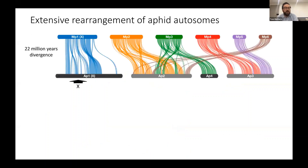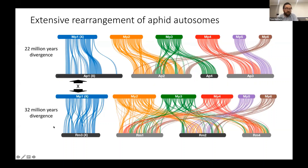Looking in more detail at Myzus persicae versus the pea aphid, we see the X chromosome conserved between the two species, but lots of rearrangements on the autosomes — typical examples of chromosome fusion or fission events between chromosomes 4 and 5 of Myzus persicae and chromosome 3 of the pea aphid. Zooming out to the more divergent comparison of Myzus persicae and Rhopalosiphum maidis, which diverged about 32 million years ago, we again see conservation of the X chromosome, but the autosomes are completely shuffled to the extent that we don't really see homology between chromosomes at all.